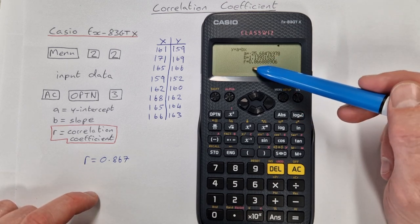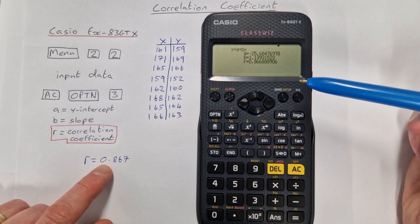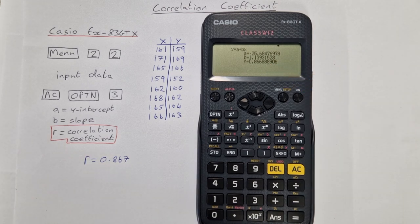And you can see it's 0.8668. I've rounded it here to 0.867 to three decimal places.